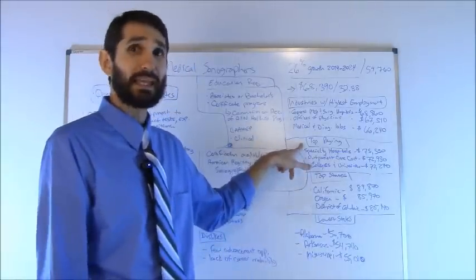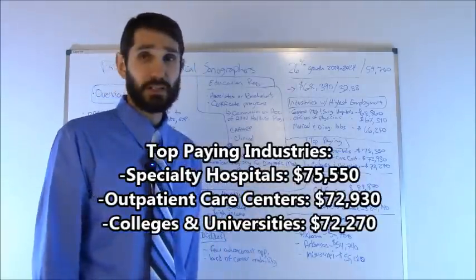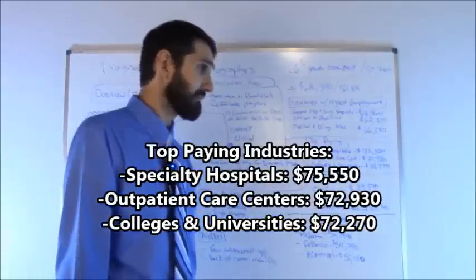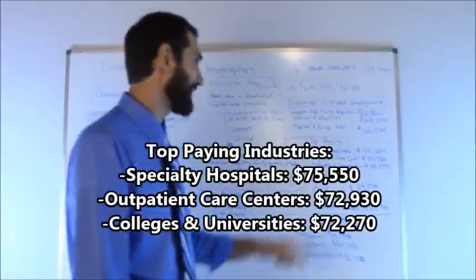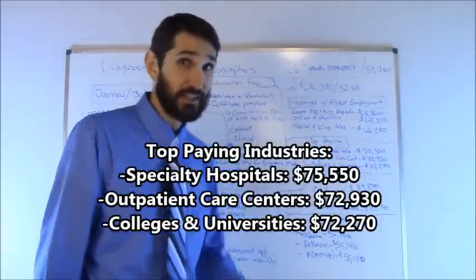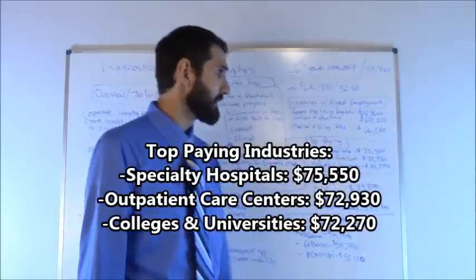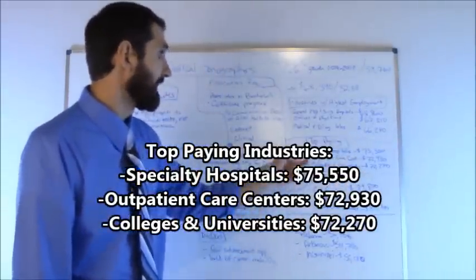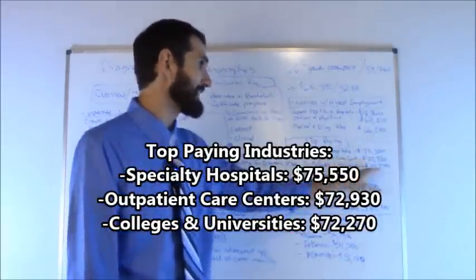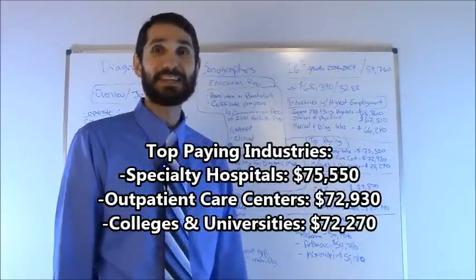What about the top paying industries? Well, specialty hospitals paid the most, $75,550 was the average salary there. Outpatient care centers came in at number two, $72,930. And then colleges and universities, believe it or not, came in at number three, $72,270.